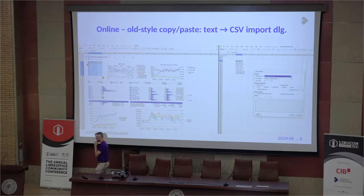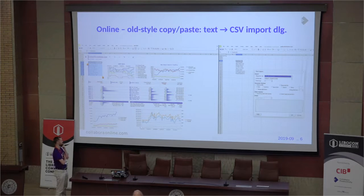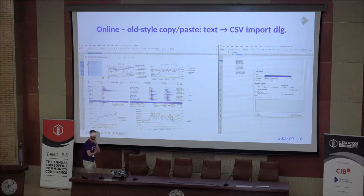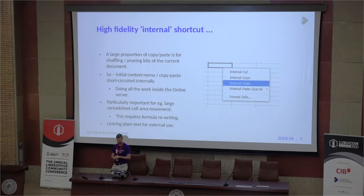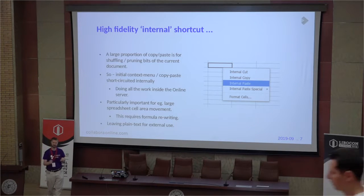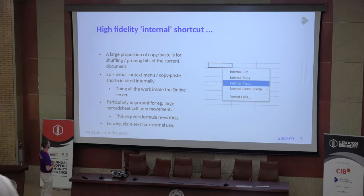Previously we used to do this, and shipping products like 6.2 and 4.0x for Collabora do exactly this. So you do a CSV import when you paste, which is not as good as it could be. The very common use case of copying inside the sheet we did with an internal shortcut — essentially send an Uno copy and an Uno paste, and it would just move the stuff internally.